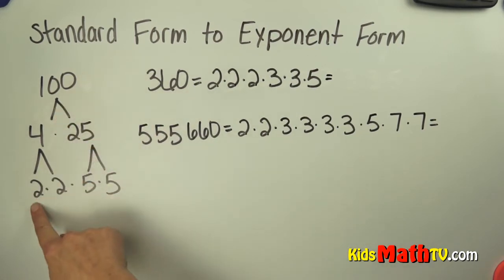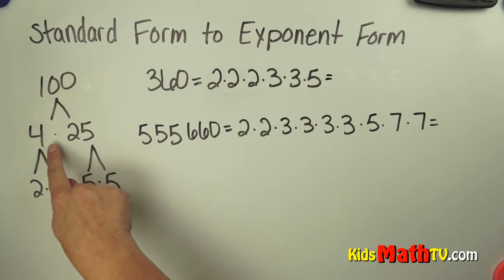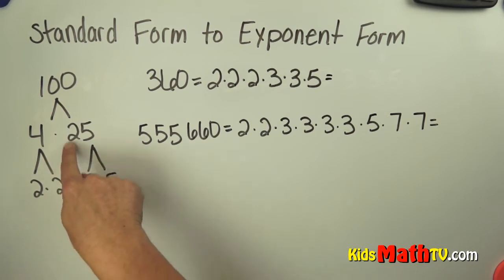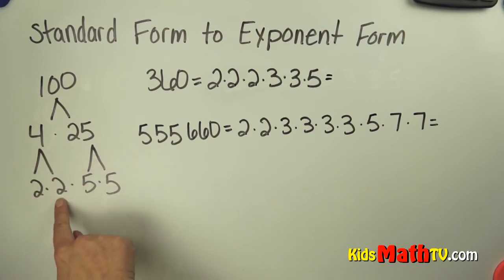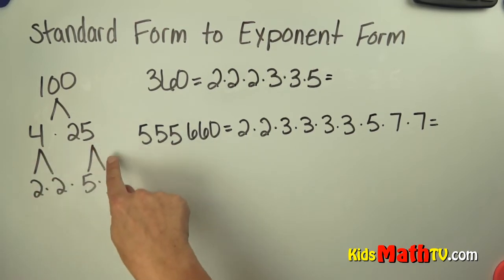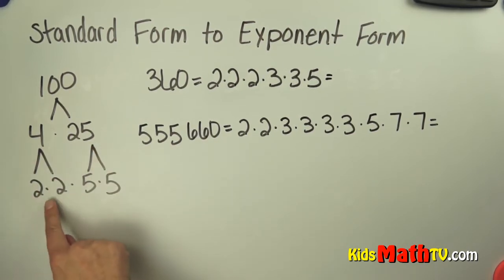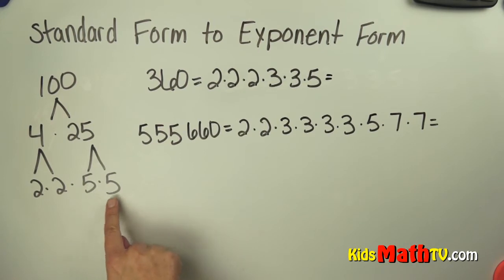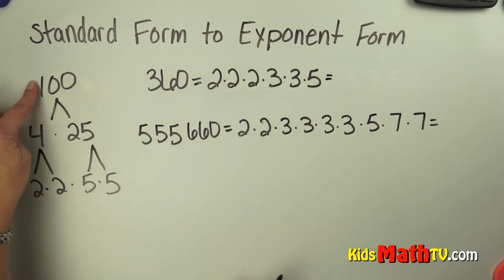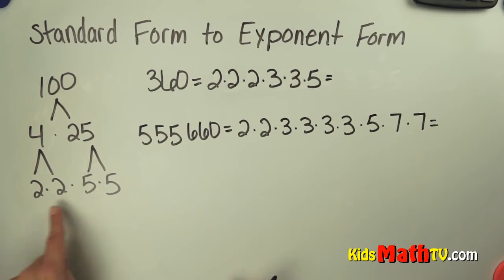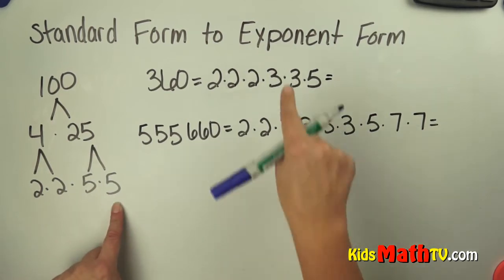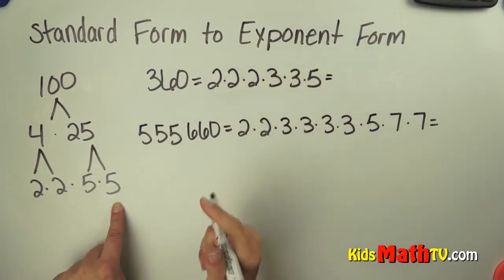We can break this up into factors — prime factors — and when we do that, 4 times 25 is 100. Then we can split 4 into 2 times 2, and 25 into 5 times 5. So 2 times 2 times 5 times 5 is 100. This is the standard form, these are the prime factors, and then I can take the prime factors and write them in exponent form.